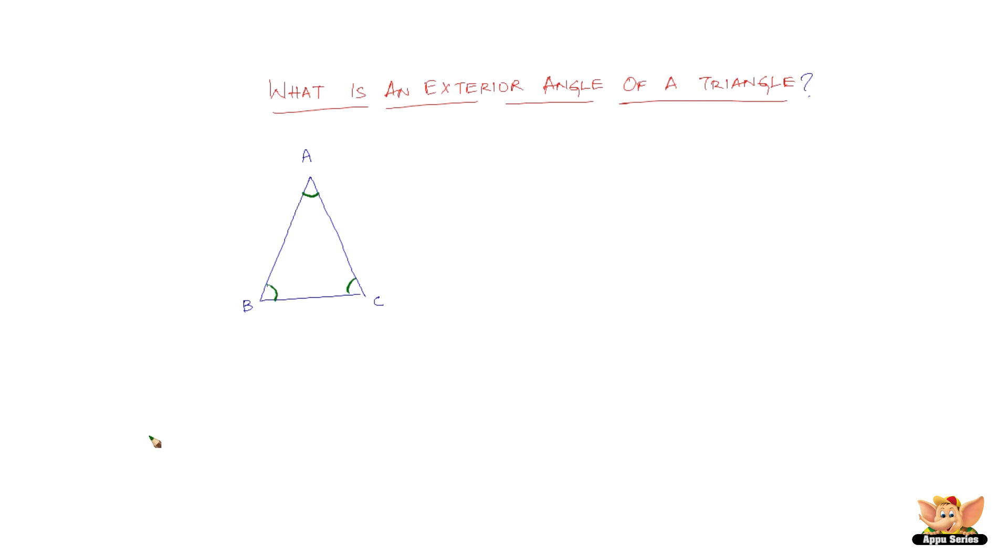So obviously, exterior angles means they have to be outside. But where? There seems to be no line outside. So it is quite simple here.